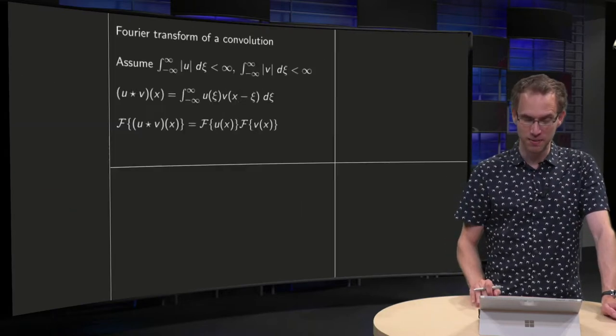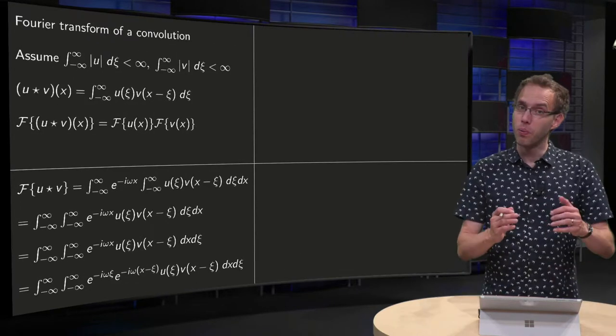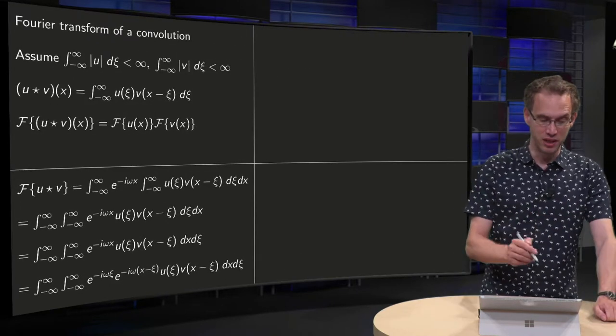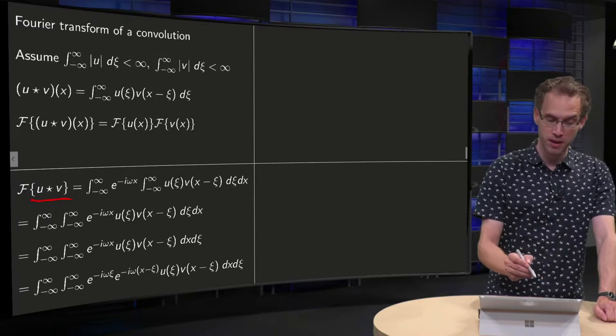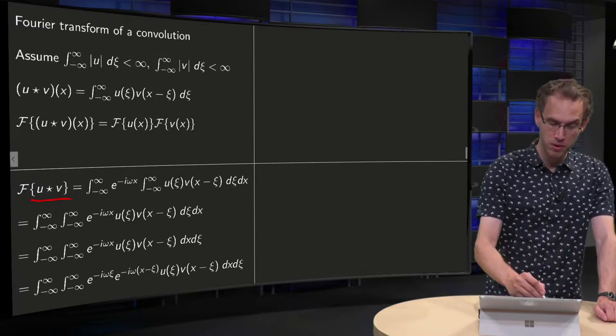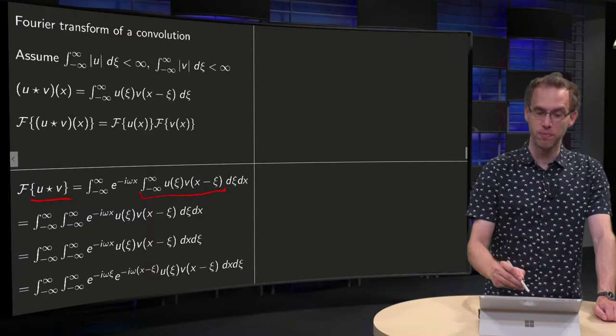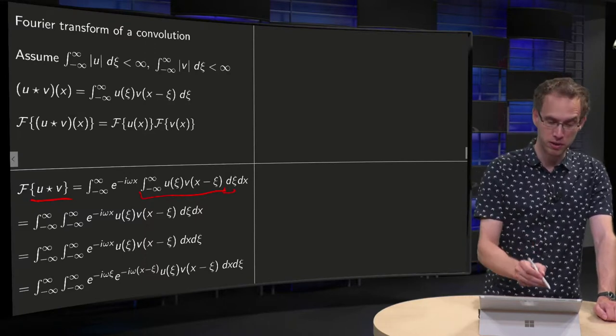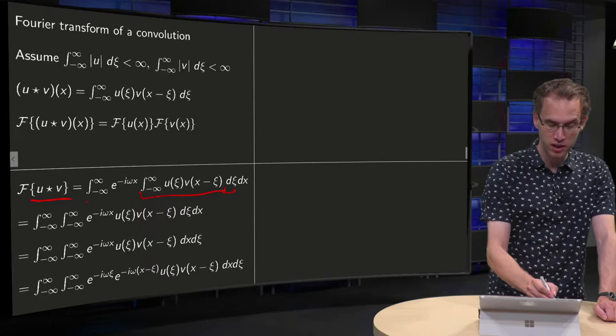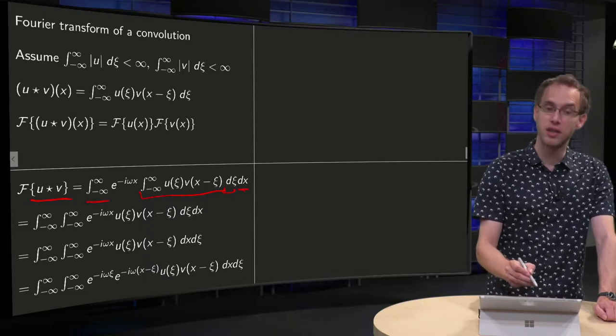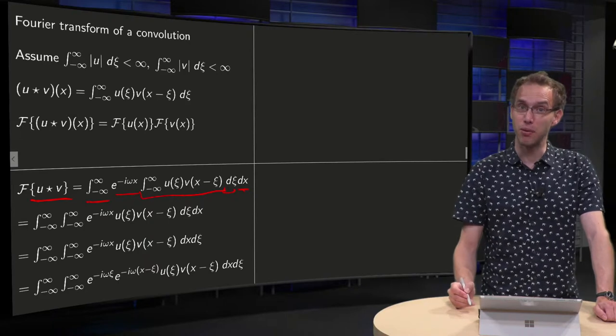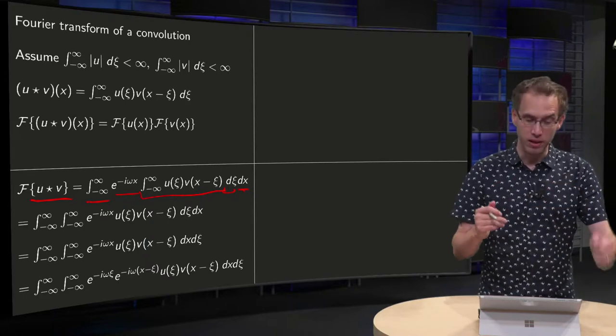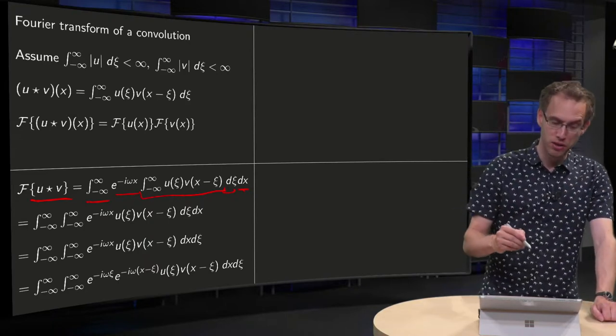So why is that? Well, let's write down the definition, the Fourier transform of the convolution. So what do we need to do? Here we have the convolution, till here. Then we have to take the Fourier transform, which means we have to integrate with respect to x and we have to add in factor e to the power minus i omega x.